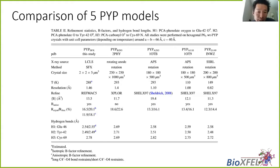The refinement statistics of the PYP SFX model determined at 1.46 Angstrom resolution were found to be comparable to other four PYP models determined mostly from synchrotron sources — two room temperature models and two cryogenic temperature models. In Table 2, we can notice that the B-factor is highest for one of the room temperature models, PYP-A283, which is an indication of global radiation damage, likely due to the small crystal size and long exposure time at a synchrotron to reach 1.1 Angstrom resolution.